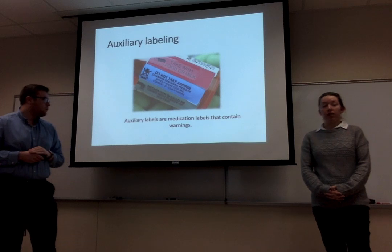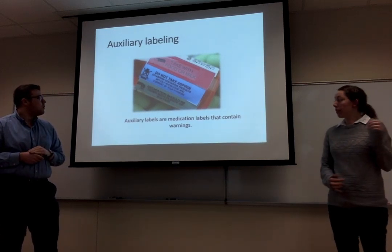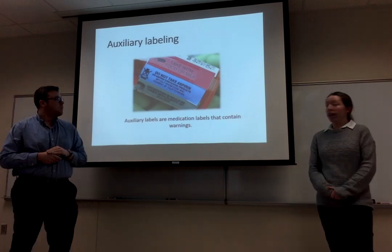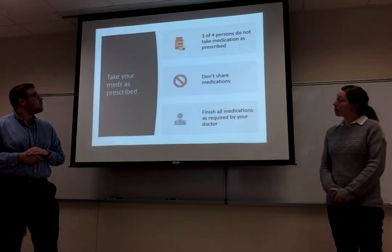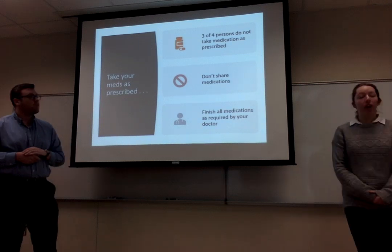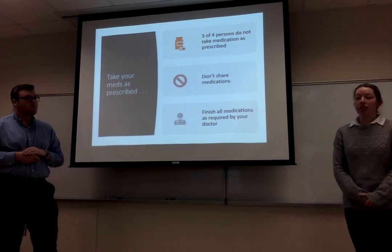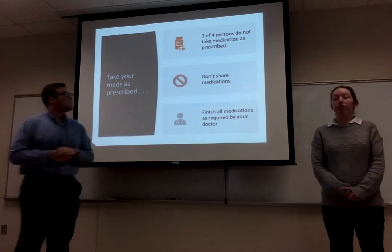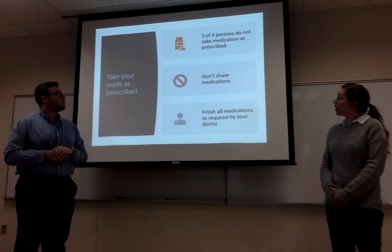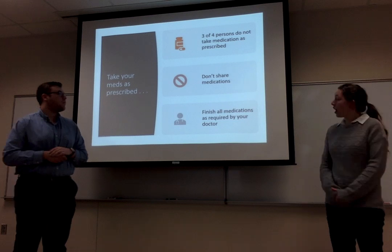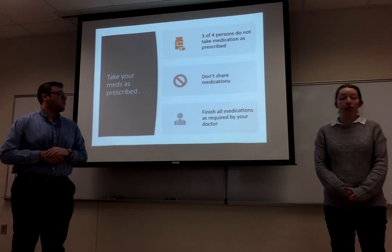So what are ancillary labels? They're those little colorful labels that come in the bottle, and they tell you important things like what to avoid, some of the side effects, and some of the bad things that you want to be aware of. Take your medications as prescribed. Three out of four people don't follow how they're supposed to take their medication. You also don't want to share your medication with anyone, even your family, and you want to finish all the medicine as told to you by your doctor.